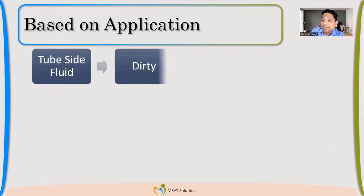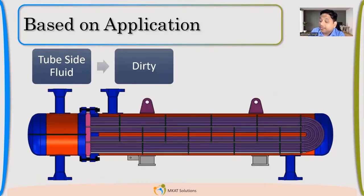Now, if the same thing is there in U-tube bundle, then it's difficult, right? So typically that U-bend portion becomes really difficult to clean. So typically we avoid having U-bundle in this scenario.